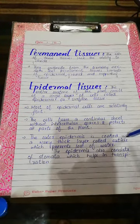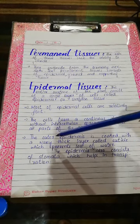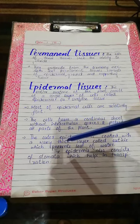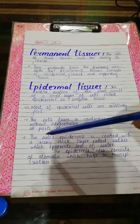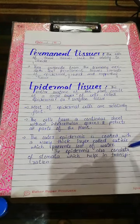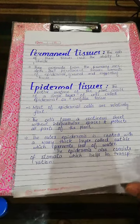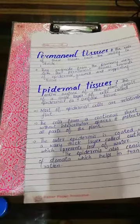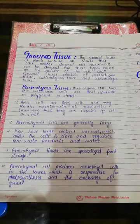The outer epidermis is coated with a waxy thick layer called cuticle. The function of the cuticle is to prevent loss of water. The epidermis also consists of stomata which helps in transpiration.